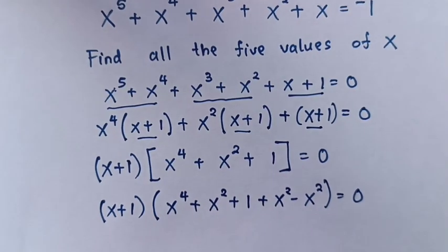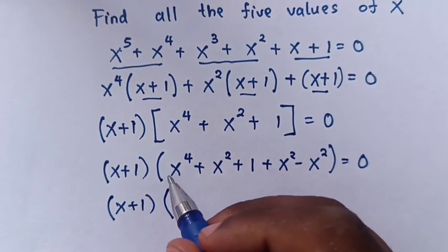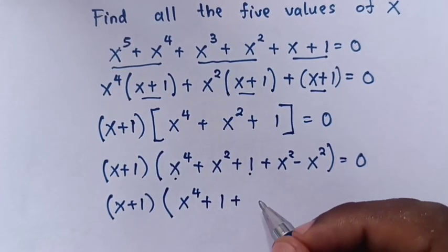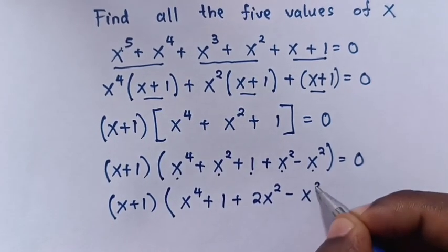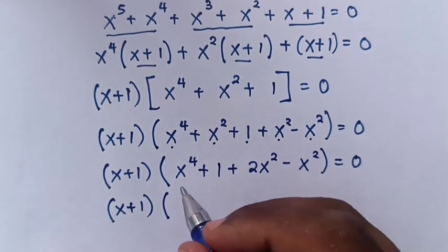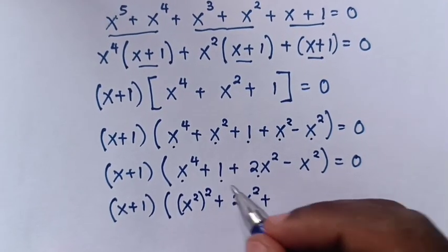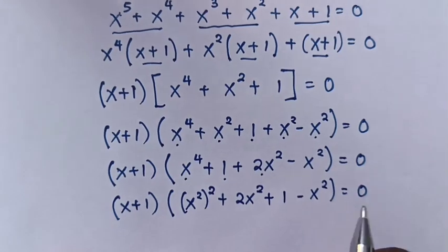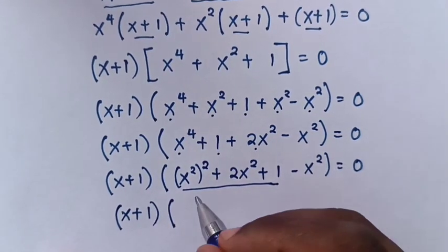We do this so as to make a perfect square quadratic equation. So the equation becomes (x + 1)(x² + x + 1)(... ) = 0, grouping terms to form a perfect square.